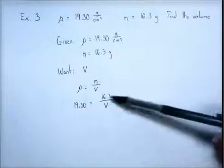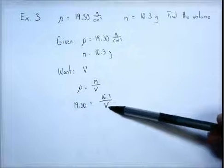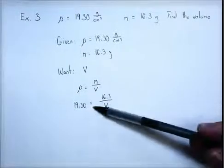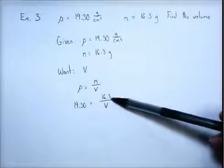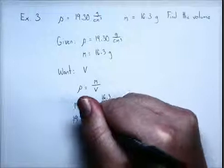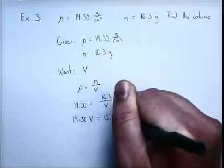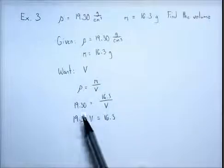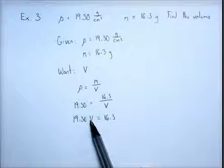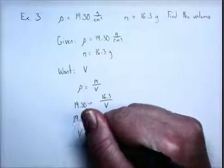Let's move this V to the other side of the equation. Anytime you have it in the bottom of a fraction, you can multiply by what's on the bottom of that fraction. And it essentially moves it across the equation. So we're going to multiply both sides by V. And we end up with 19.30 V equals 16.3. Now we're left with a very workable situation. We have 19.3 times the volume. We want the volume by itself, so we're going to divide both sides by 19.3.